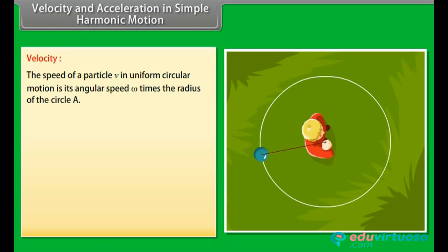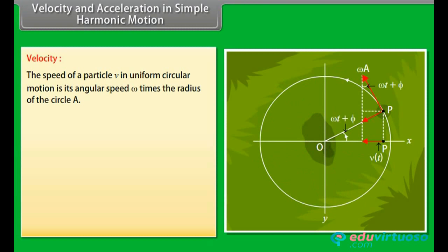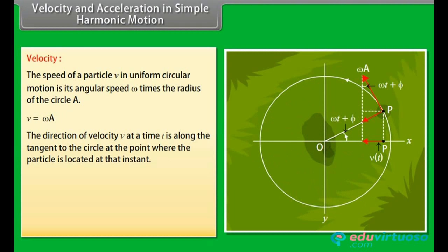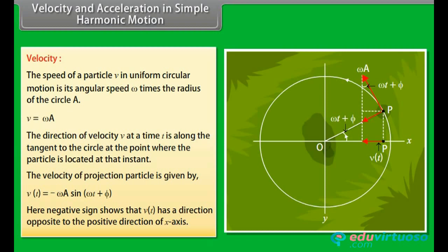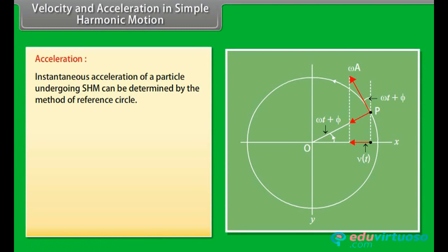Velocity and acceleration in simple harmonic motion: the speed of a particle V in uniform circular motion is its angular speed ω times the radius A, so V = ωA. The direction of velocity at time t is along the tangent to the circle at the particle's location. The velocity of the projection particle is given by V(t) = −ωA sin(ωt + φ), where the negative sign shows that V(t) has a direction opposite to the positive direction of the x-axis.